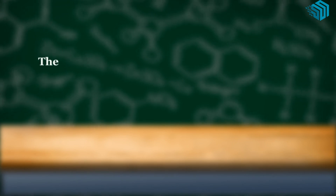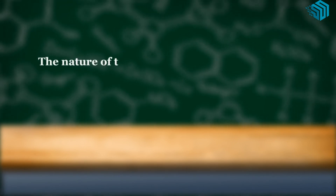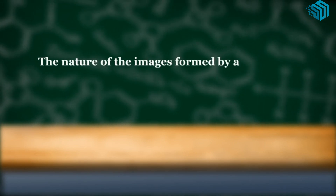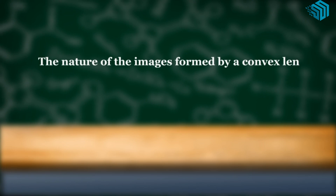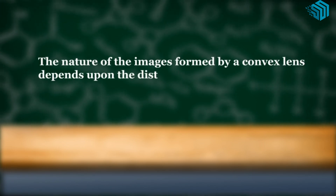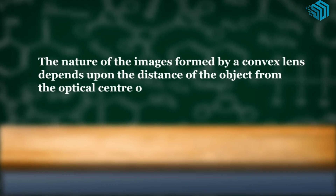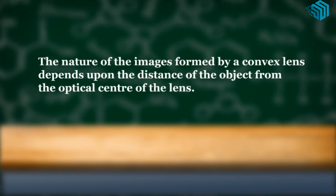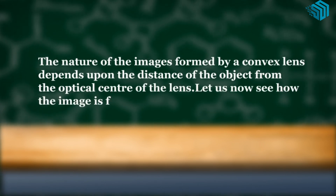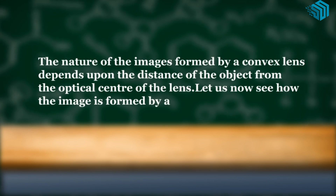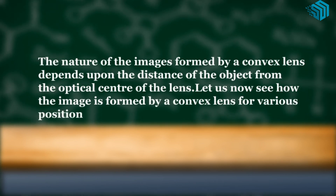The nature of images formed by a convex lens depends upon the distance of the object from the optical center of the lens. Let us now see how the image is formed by a convex lens for various positions of the object.